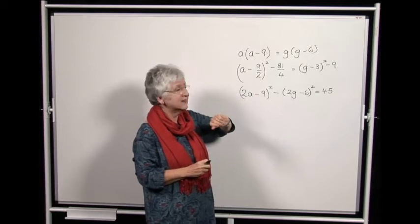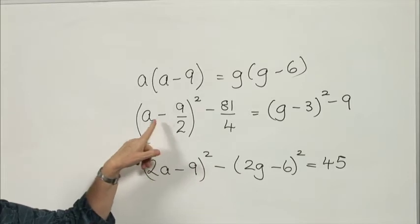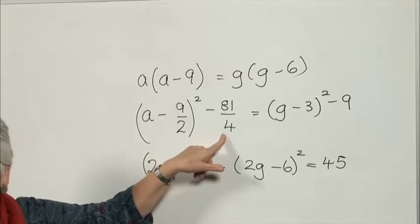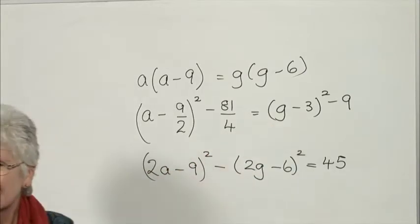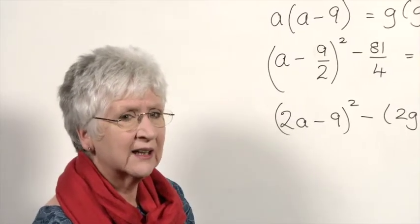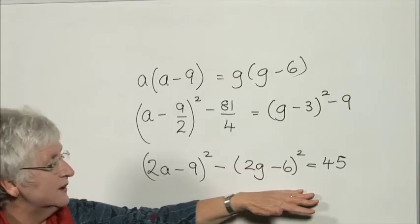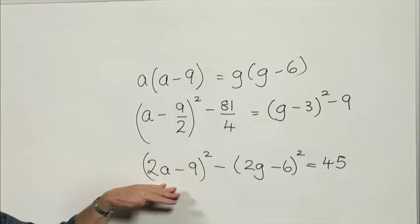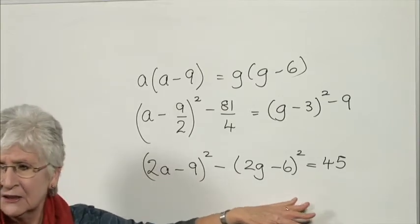It might be a good idea to consider completing the square. And then I would get a minus 9 over 2 squared minus 81 over 4 is g minus 3 squared minus 9. Now I really don't like fractions, so I'm going to multiply everything by 4, and I get 2a minus 9 squared minus 2g minus 6 squared equals 45.